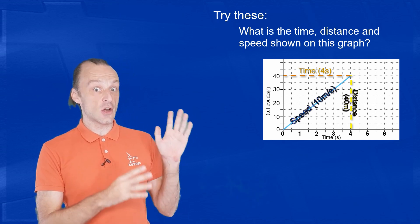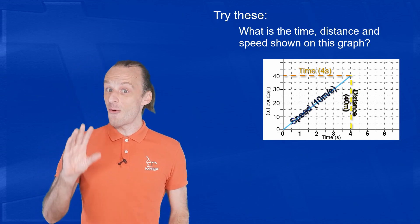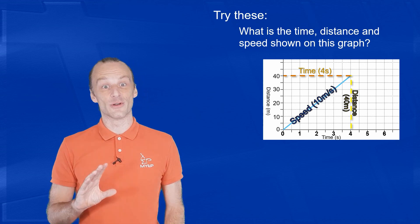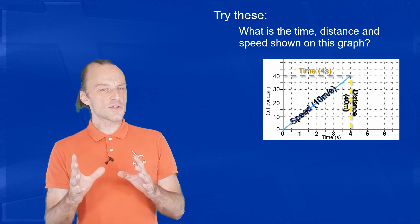So if this graph is of a person running, then they are almost as fast as Usain Bolt, the world record holder.